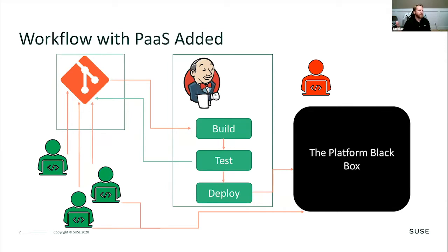Once you add a platform as a service to this infrastructure, it becomes more opinionated. You have this extended workflow that connects directly into what we call a 'black box,' because it's doing some magic behind the scenes that you don't necessarily see. From a developer perspective, you expect the platform to do as you tell it and just spit out your application to run — and that's what you want this black box to do.